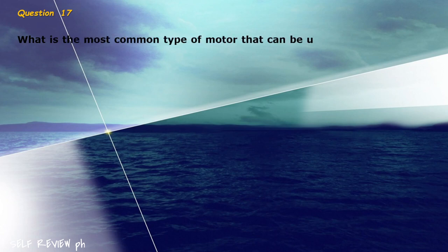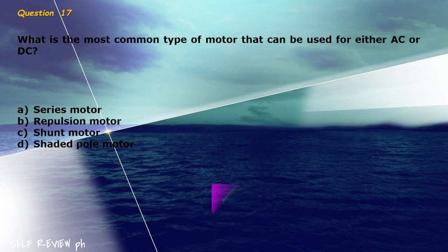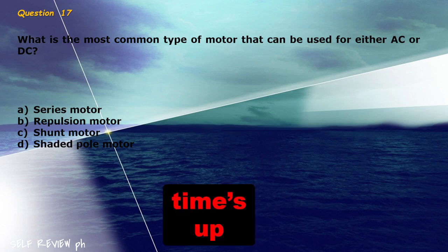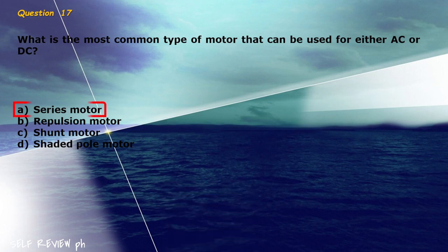Question 17: What is the most common type of motor that can be used for either AC or DC? A) series motor, B) repulsion motor, C) shunt motor, D) shaded pole motor. The correct answer is letter A, series motor.